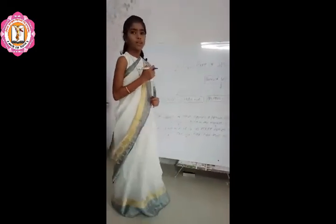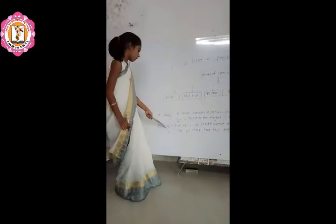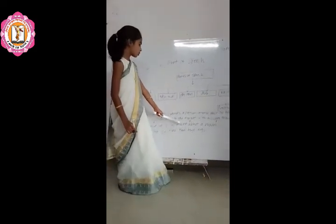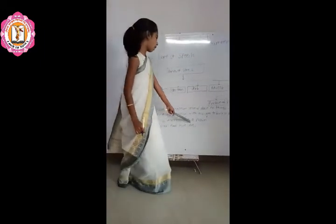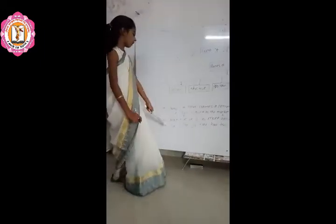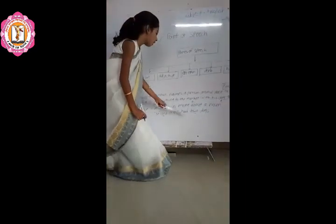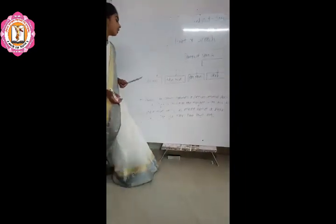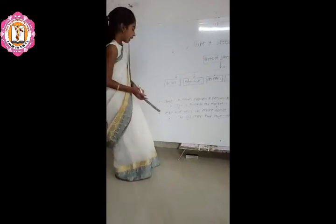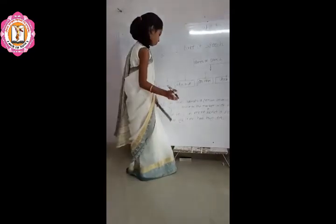Now we see the second one: adjective. Adjective tells us more about a noun. For example: the old man had two dogs. Now in this example, there are two adjectives.